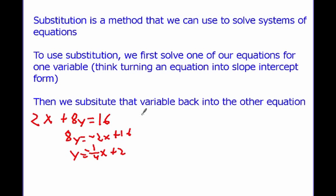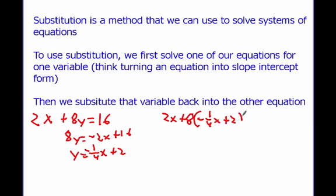Now, what we want to do is substitute that variable back into the other equation. So, we know 2x plus 8y equals 16. That means 2x plus 8 times (negative one-fourth x plus 2) equals 16. All I did is say y equals this expression, meaning this means the same thing as y, so I substitute — I plug that in.